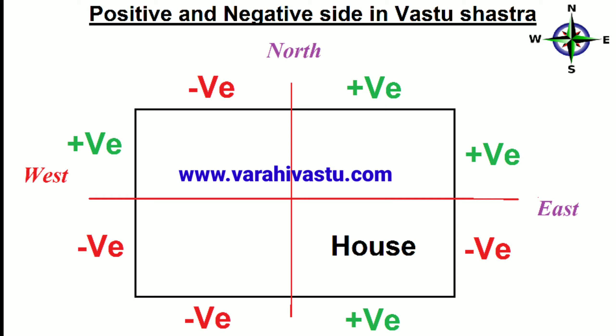Bigger-sized windows in the north or east direction allow good prana shakti to enter the house as per Vastu. According to Vastu Shastra, north brings prosperity while east brings progress and a healthy life. Check the windows at your place, where they are, and rectify them to get abundance of health and wealth.